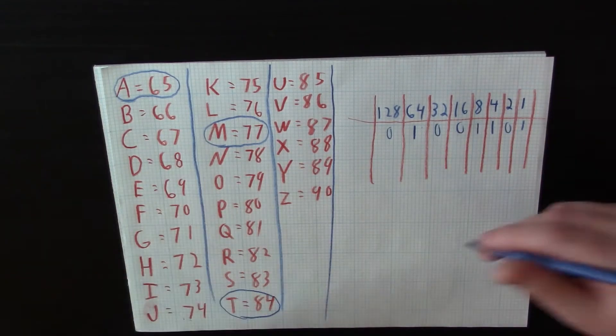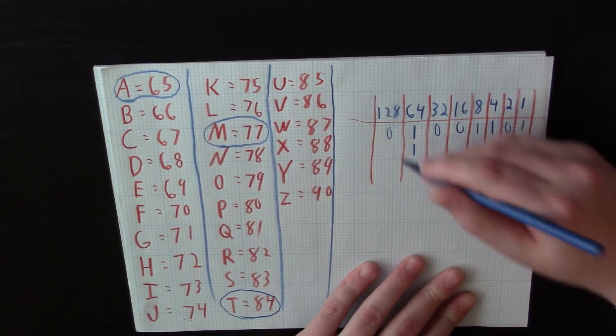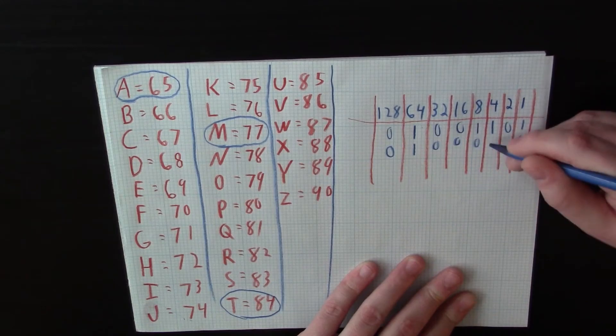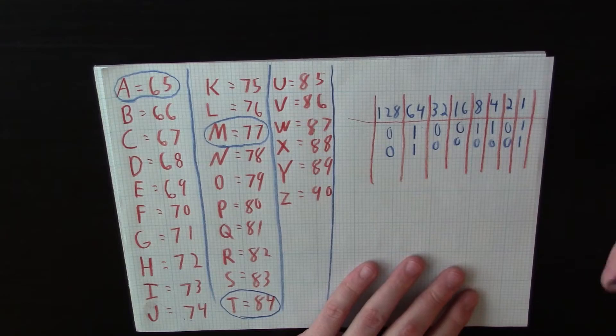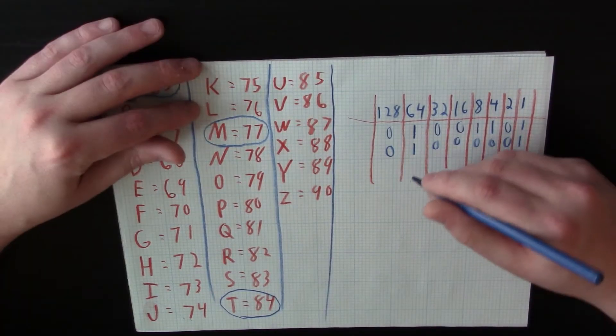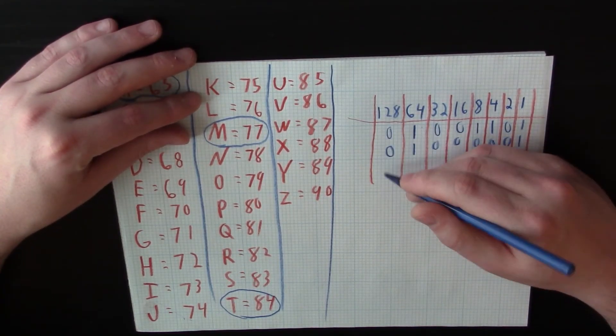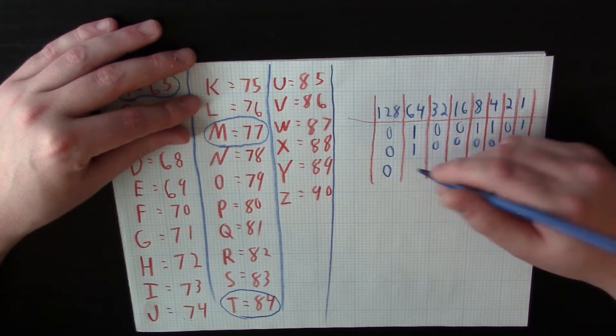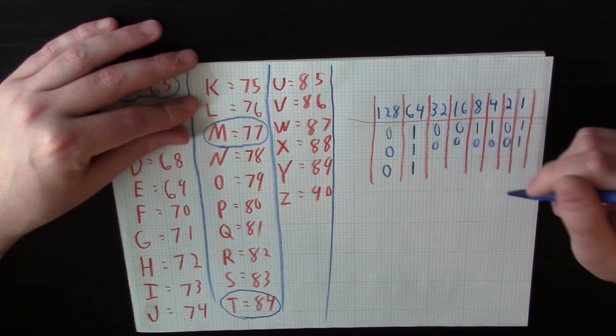A we already know is 65. So we're going to put one in 64 and one in one. And now we need 84 twice. So once we do one, we have the other. Well, we don't have an 84, and we can't mark 128. So we mark 128 with zero. It does fit in the 64, 64 does fit in 84. So we'll put a one there and that should leave us with 20.